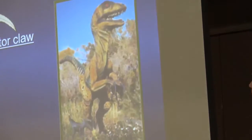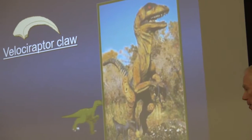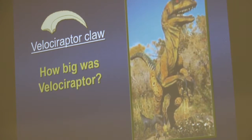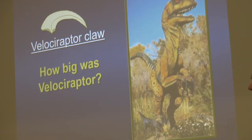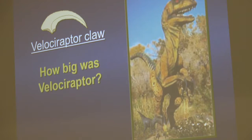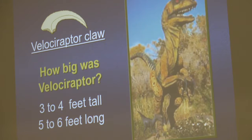Here's a dinosaur made famous in the Jurassic Park movies — the Velociraptor. In that movie they had the Velociraptor at 8 to 10 feet tall and smarter than Albert Einstein. But in fact the real Velociraptor was only about 3 to 4 feet tall. Remember — Hollywood. Don't take Hollywood as your source of information.